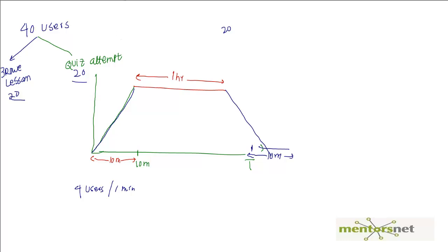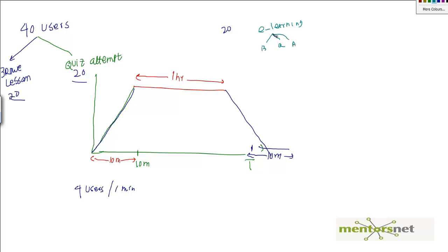Welcome back. In the last video we saw how to create a real world scenario with a ramp up, steady state, and ramp down. In this video let's consider another scenario. The application we're simulating is an e-learning application. In this application, students can browse lessons, attempt a quiz, submit an assignment, participate in a discussion forum, and update the glossary.